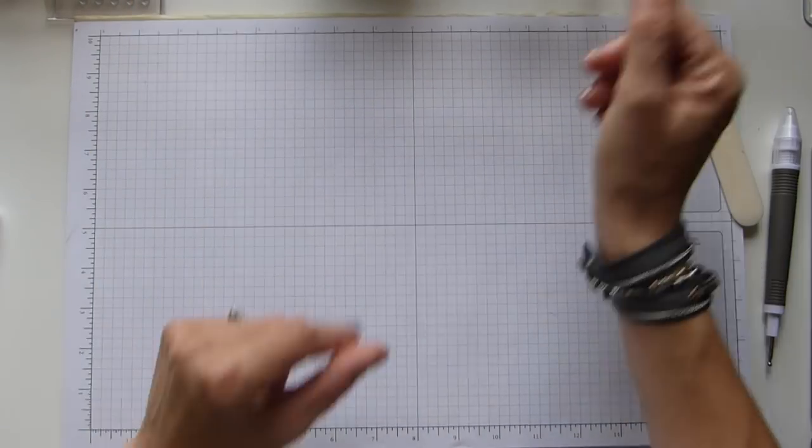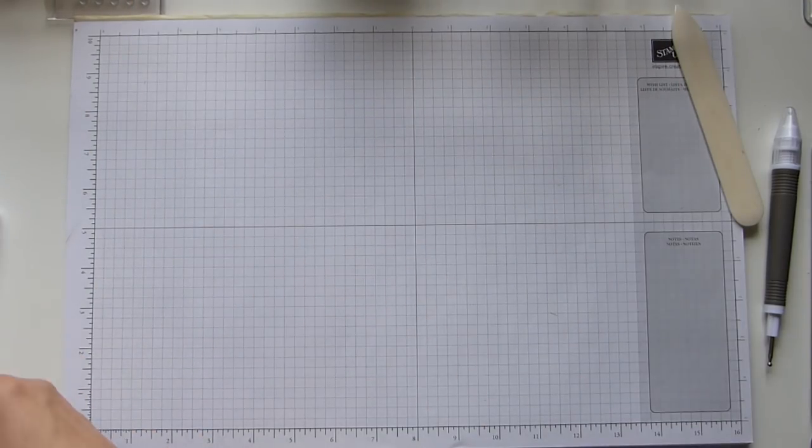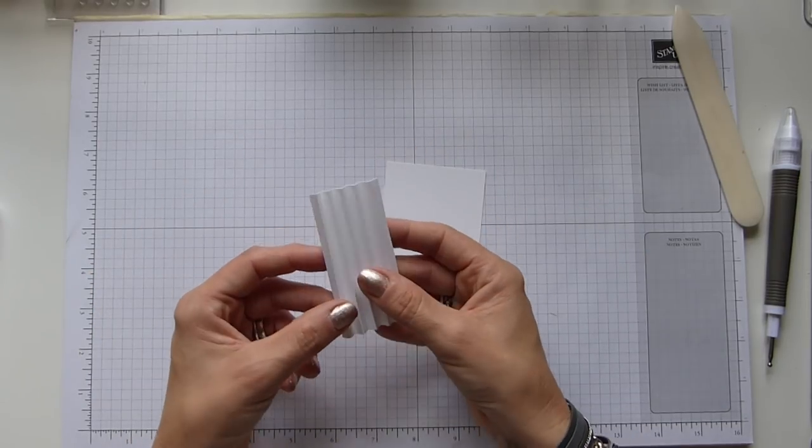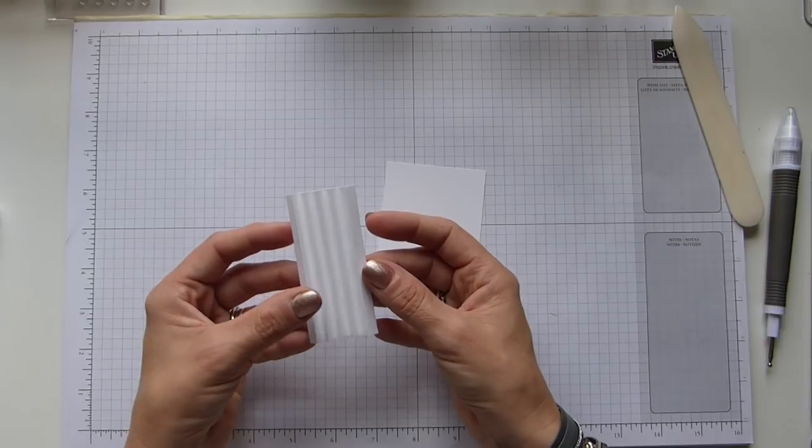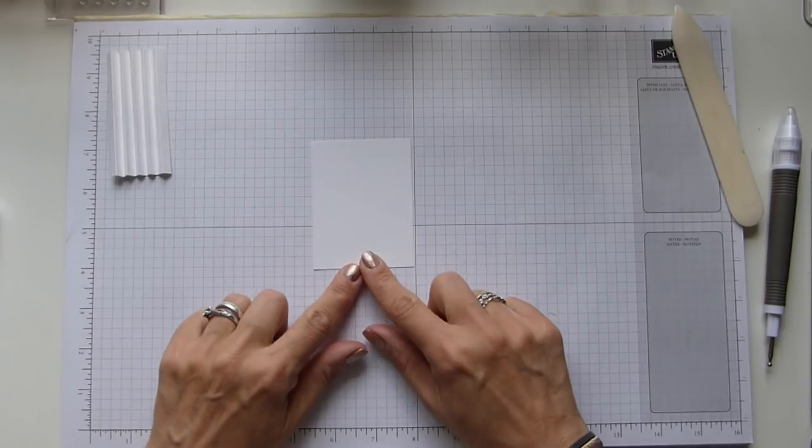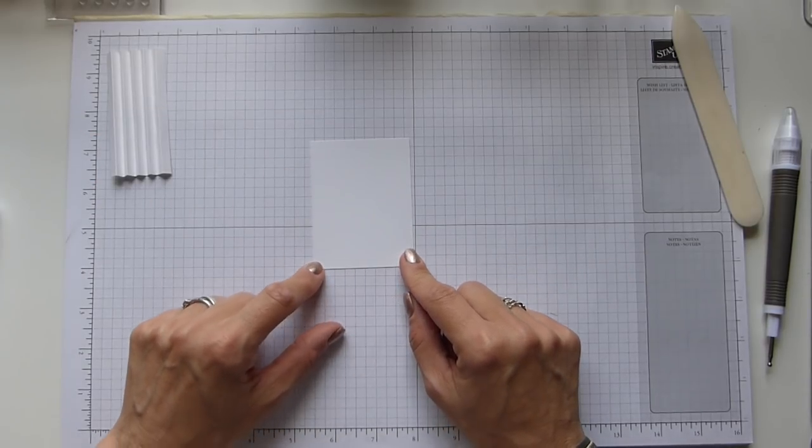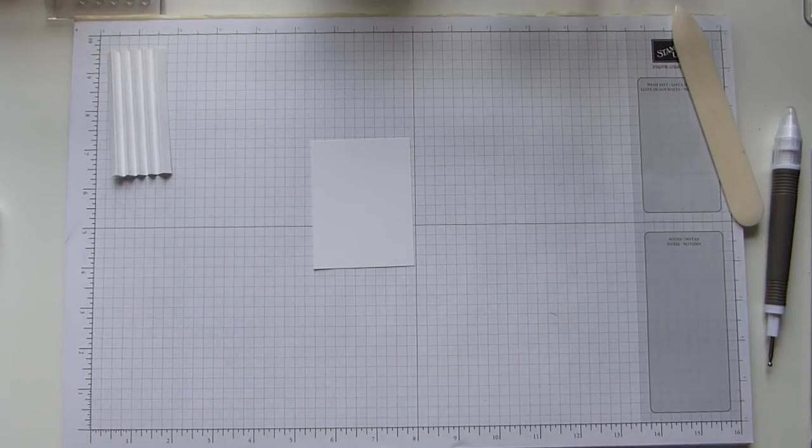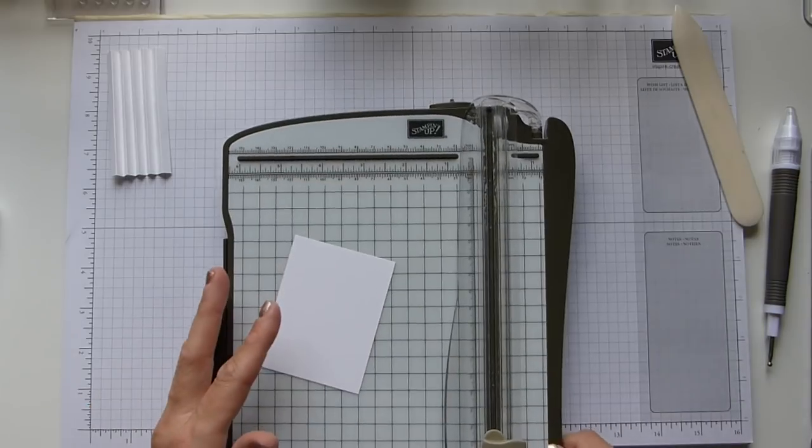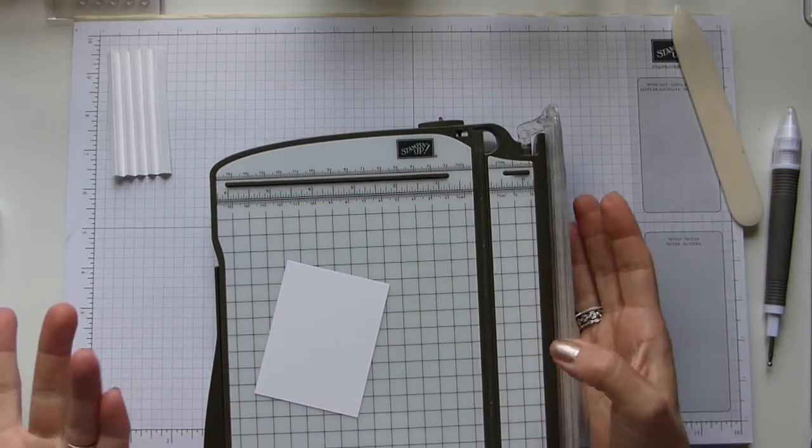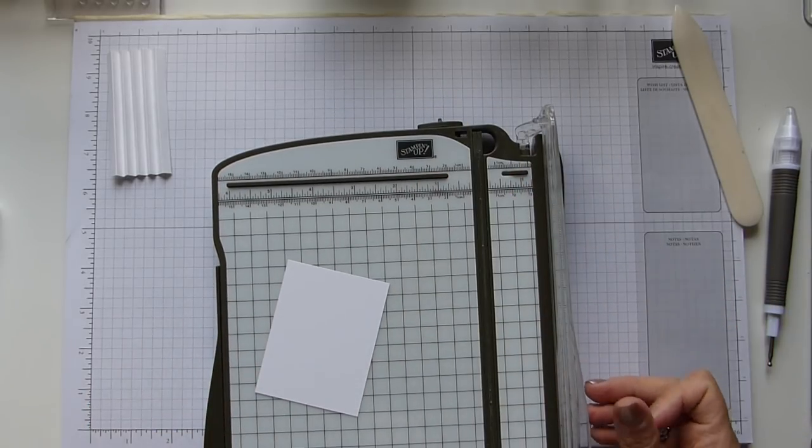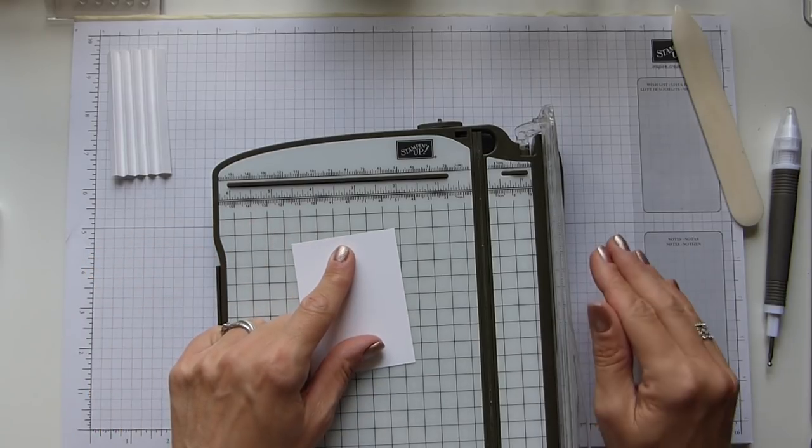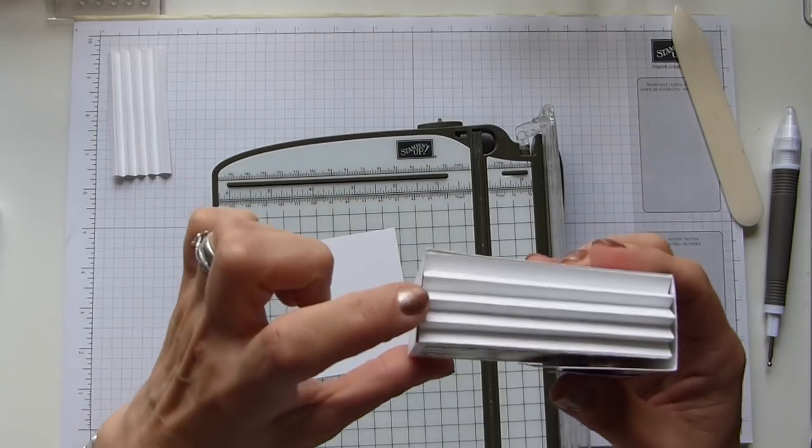I'm going to pop that to one side for a moment because we need to make our concertina sides. I've already done one because they are a bit time-consuming and fiddly, but you're going to need two pieces of 2 and a half by 3 and a quarter. I did find this easier to do on my trimmer. We're going to score on the short side.